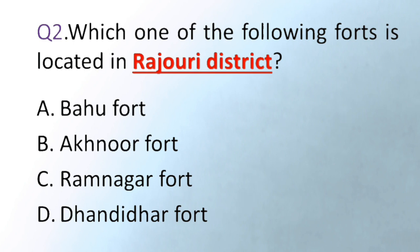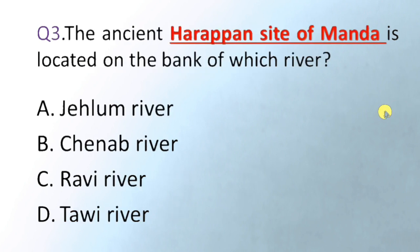Our next question is: the ancient Harappan site of Manda is located on the bank of which river? Option A is Jhelum River, B Chenab River, C Ravi River, D Tavi River. The correct answer is Chenab River — the Harappan site of Manda is located on the bank of the Chenab River in Akhnoor city.